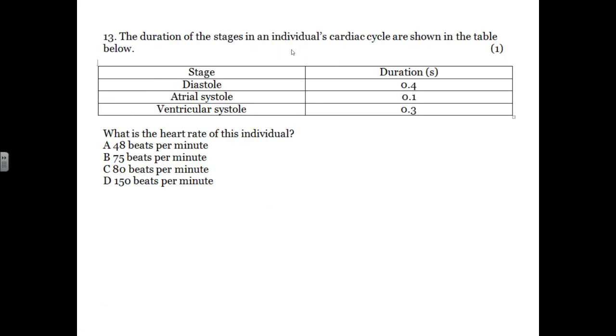And the duration of the stages in an individual's cardiac cycle are shown in the table below. So diastole, atrial systole, ventricular systole. What's the heart rate? So it looks like it takes 0.8 seconds in total to get from the diastole to the end of the ventricular systole. We've done this calculation already. That means it's 75 beats per minute: 60 over 0.8.